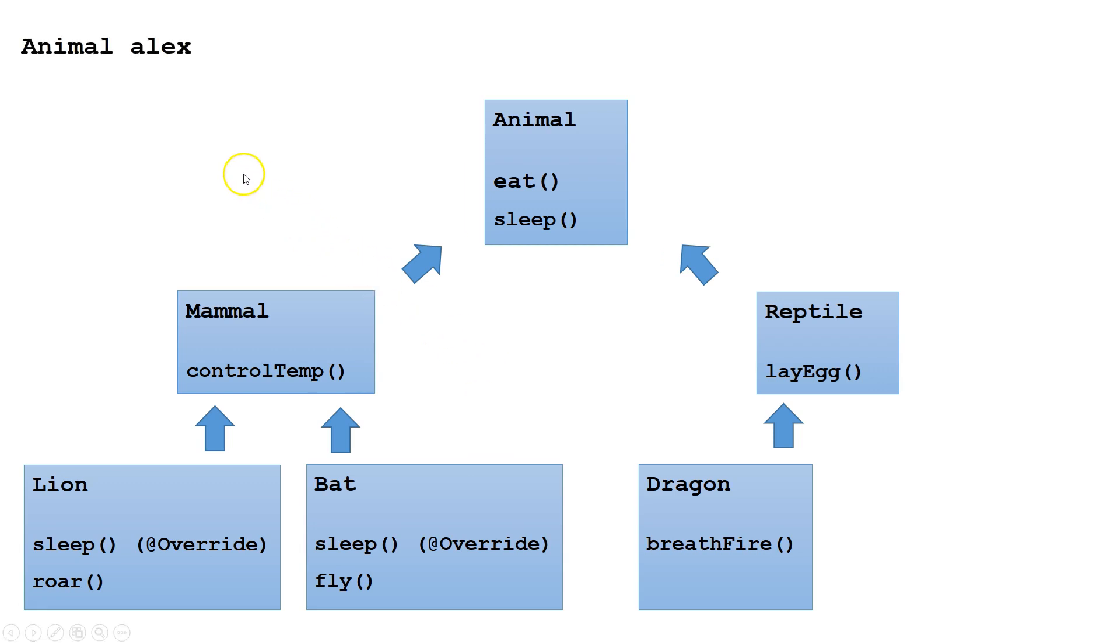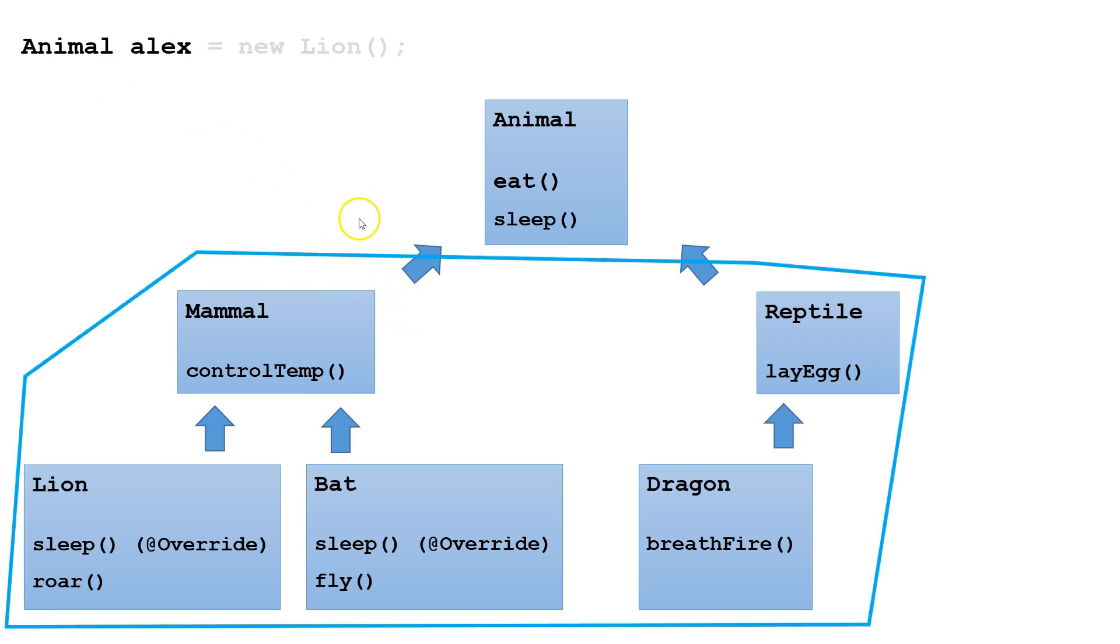Let's write some code. Imagine we declare a variable alex of type Animal. Since alex is an Animal type variable, it can point to an object of either Animal or any of Animal's subtypes. Imagine we have alex point at a new instance of the Lion class.